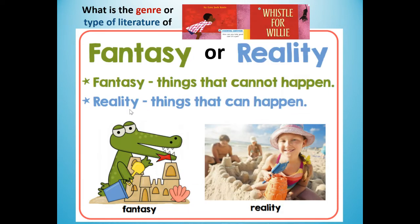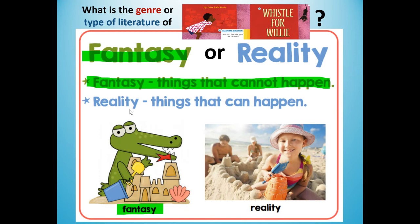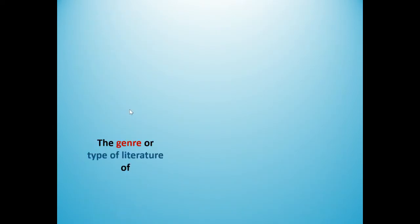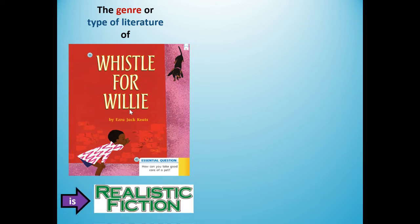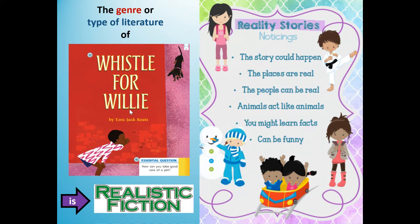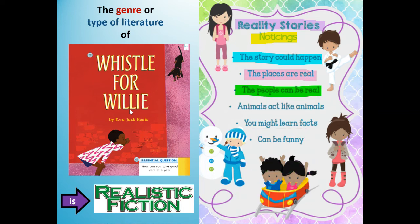What is the genre or type of literature of Whistle for Willie? Is it fantasy? Fantasy means things that cannot happen. Or is it realistic fiction? Reality means things that could or can happen. The genre of Whistle for Willie is realistic fiction. Realistic fiction means it's a story that's made up, but the story could happen. The places are real, the people could be real, animals act like animals — like Willie acts like a dog. You might learn facts, and it can be funny.